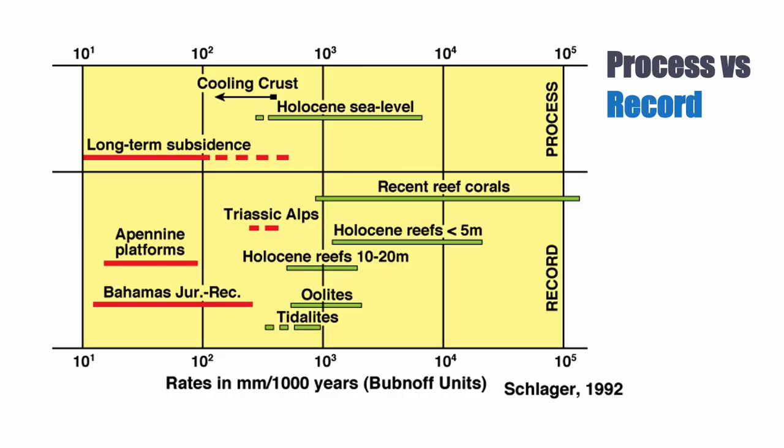But if you look at longer-term thickness of ancient platforms — such as the Apennine platform, the Triassic Alps, or the Bahamas from the Jurassic to the recent — shown as the red curve at the bottom, the rates are much lower. That's because on the long term, what controls sediment accumulation is ultimately tectonics — subsidence. It's the long-term subsidence rate that controls, at the geological time scale, the thickness of sediments that can accumulate.